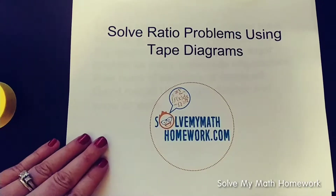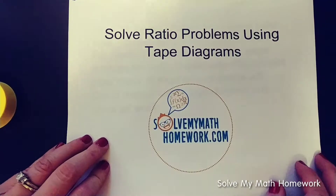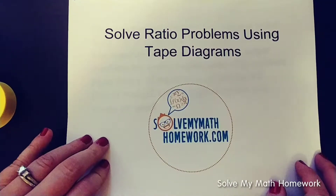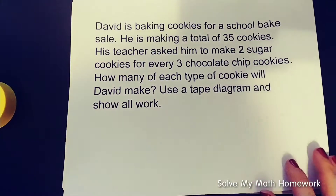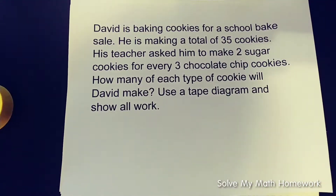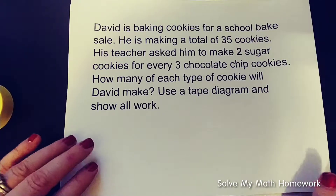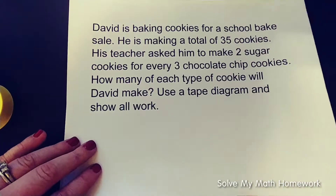We're going to talk about tape diagrams. Tape diagrams are a very good visual way to teach students about ratios. The problem says: David is baking cookies for a school bake sale. He is making a total of 35 cookies. His teacher asked him to make two sugar cookies for every three chocolate chip cookies. How many of each type of cookie will David make? Use a tape diagram and show all work.